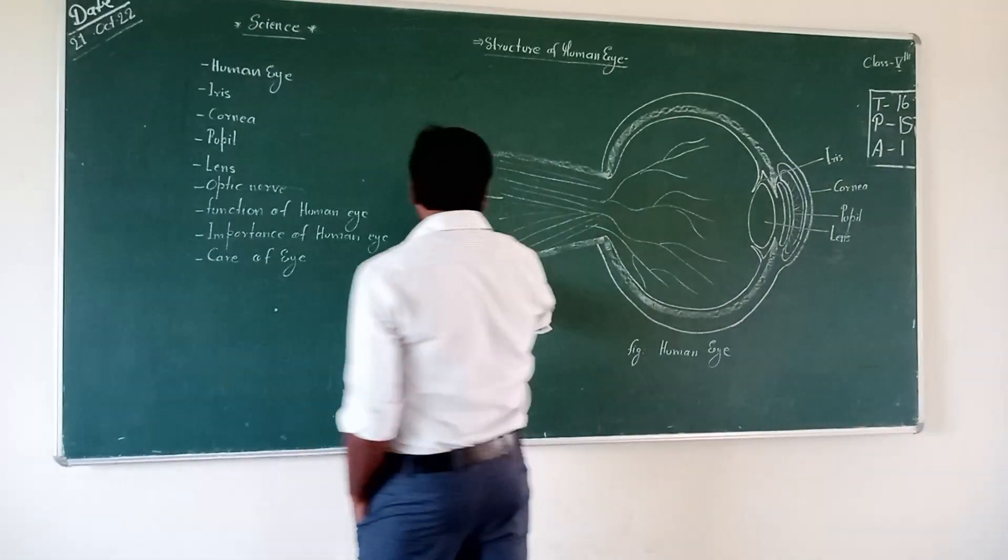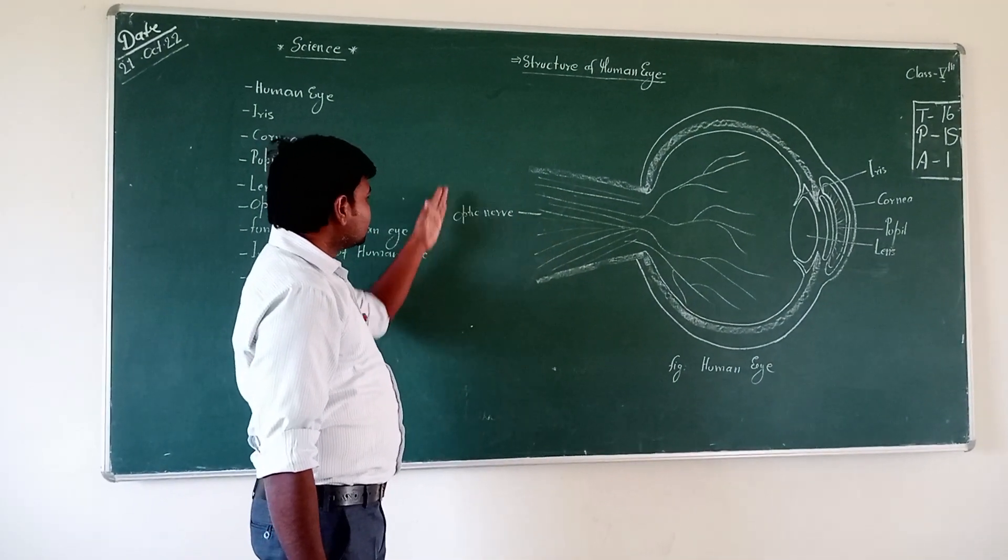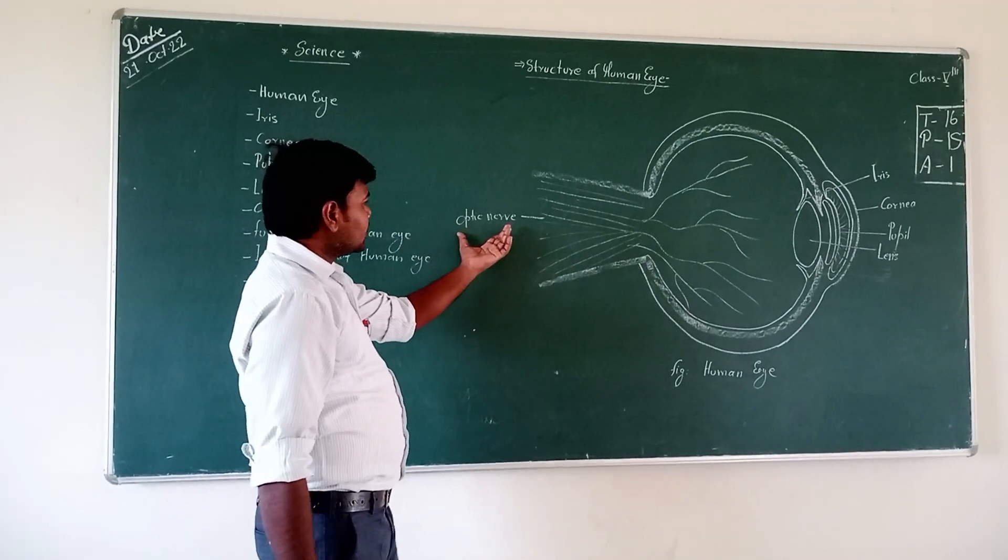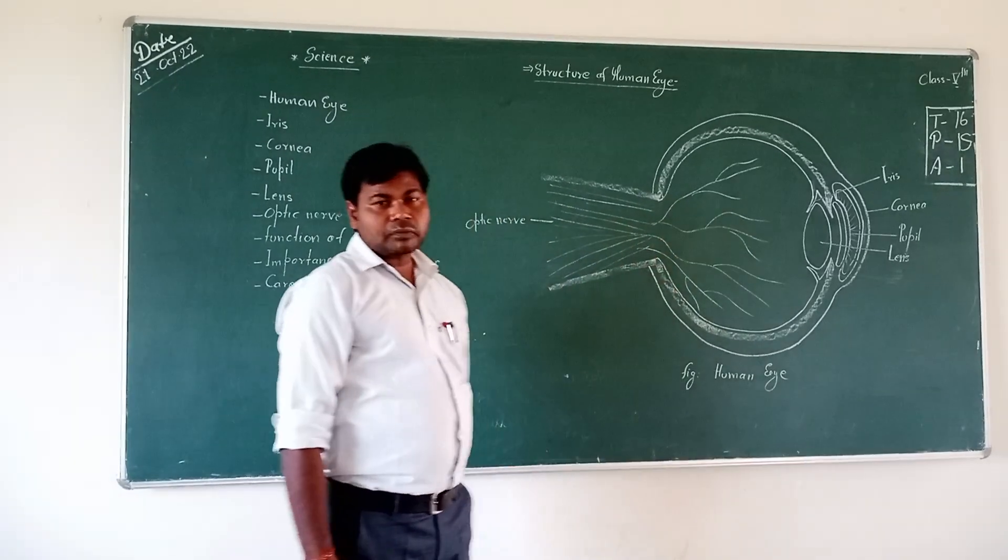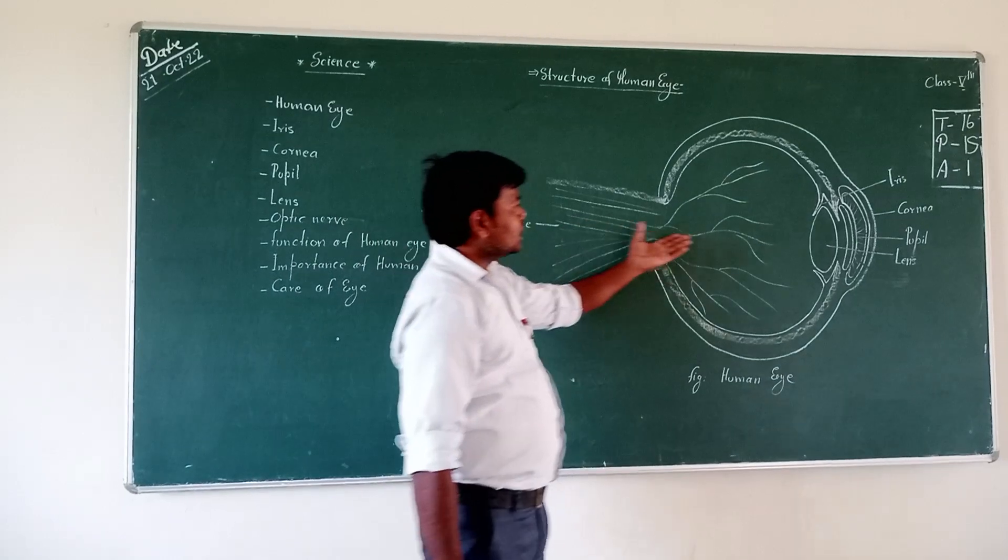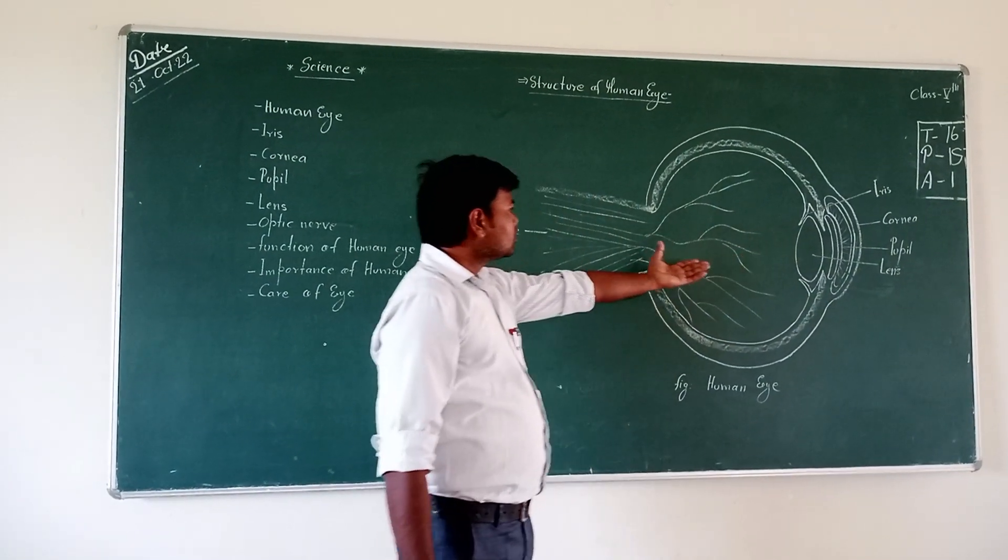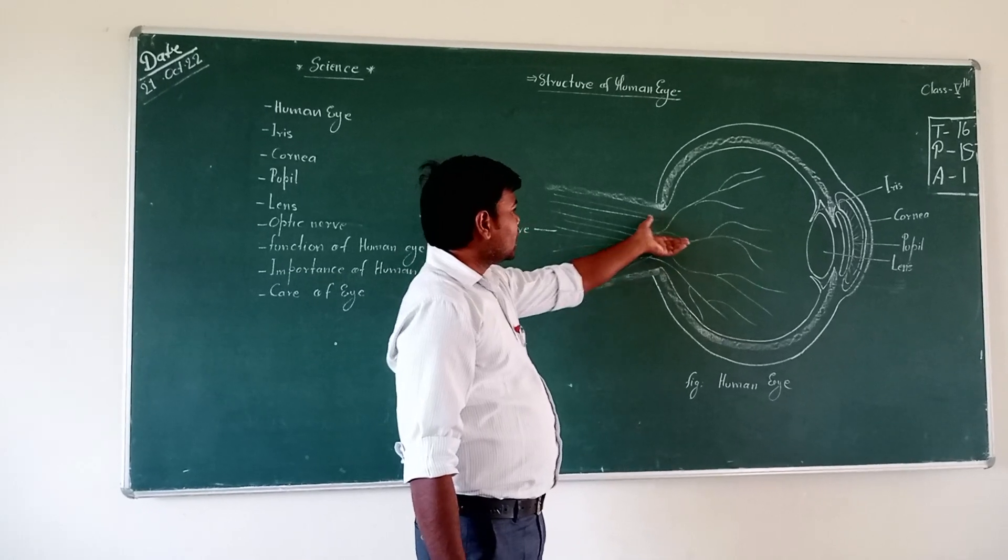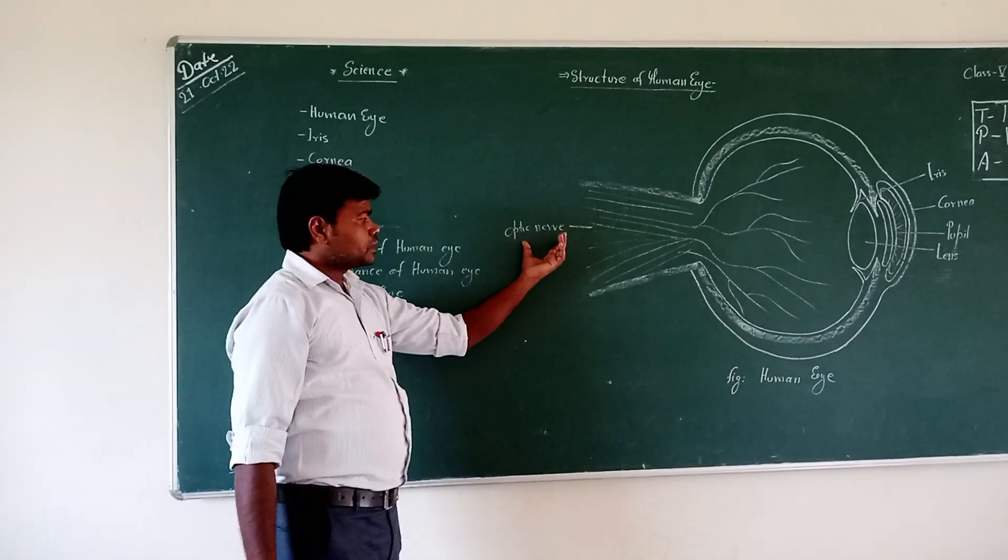The main function of optic nerve is the lens referred due to some visual image according to nerve-like spectrum. It is also known as optic nerve.